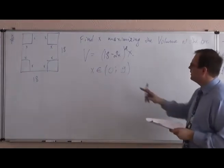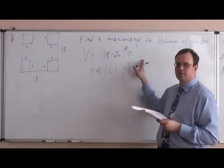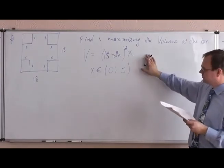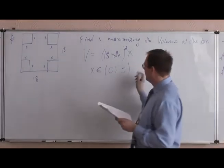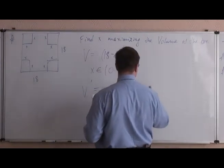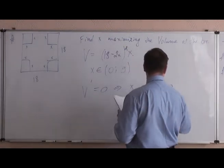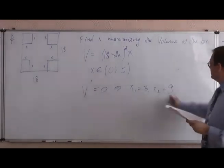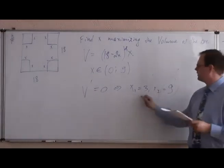But basically what you have to do, you have to find the derivative of this function. You have to solve this quadratic equation. V prime is equal to zero. Here we have like x1 equals to three, hence x2 equals to nine. Nine is not good enough. So the correct answer is three.